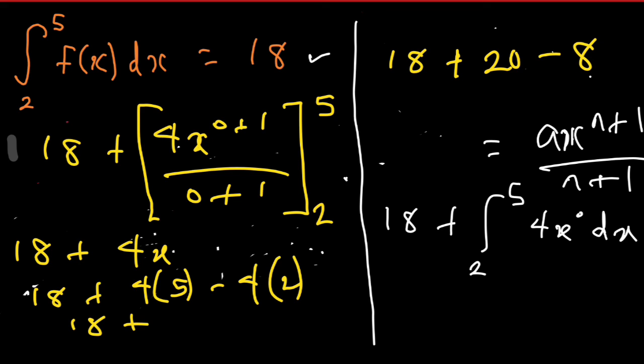18 plus 4 times 5 is 20 minus 4 times 2 is 8. So this should give us 20 minus 8 is 12. 12 plus 18, my answer will be equals to 30.